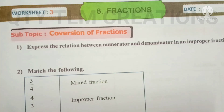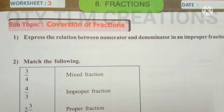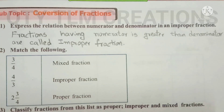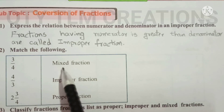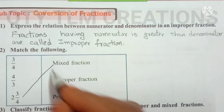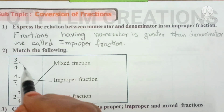Next, worksheet number three, subtopic: conversion of fractions. First question: express the relation between numerator and denominator in an improper fraction. Fractions having numerator greater than the denominator are called improper fractions. Next question: match the following — 3/4, 4/3, 2 and 3/4. The mixed fraction is identified, the improper fraction is identified, and the proper fraction is identified.